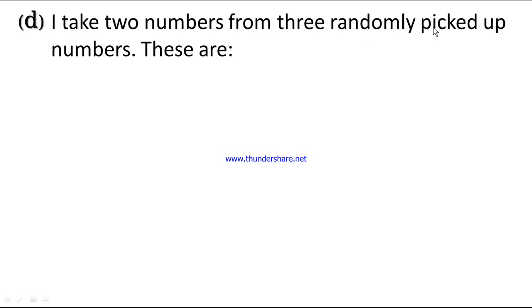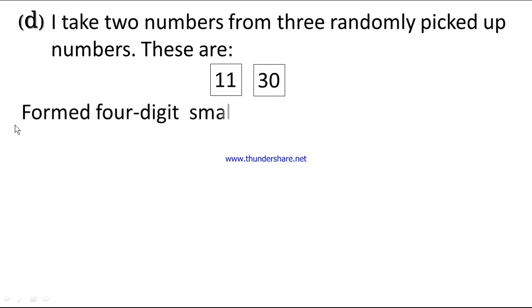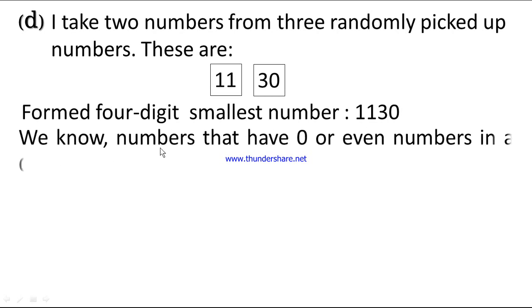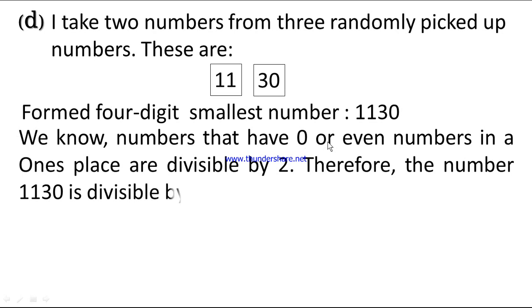Number d. I take two numbers from three randomly picked up numbers, these are 11 and 30. Formed four digit smallest number is 1130, one thousand one hundred thirty. We know numbers that have 0 or even numbers in ones place are divisible by 2. Therefore, the number 1130 is divisible by 2.